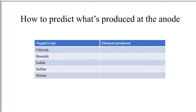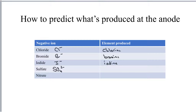Now if your negative ion is a halide ion — so a chloride, bromide, or iodide ion — the element produced at the anode, at the positive electrode, would be either chlorine, bromine, or iodine. Now if you've got a negative ion with more than one element in it, like a sulfate ion, SO42-, or a nitrate ion, NO3-, what happens in that case is you get oxygen produced.